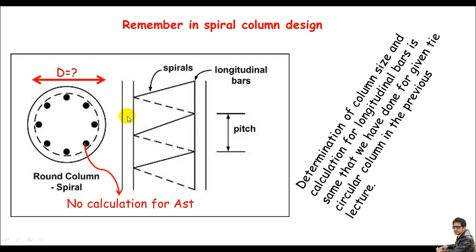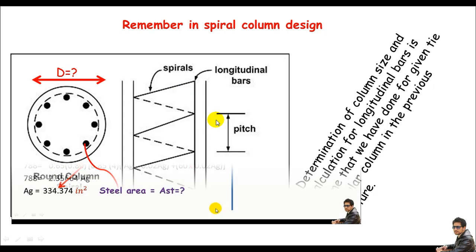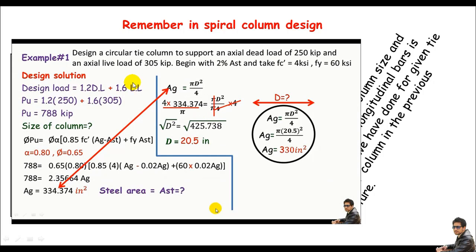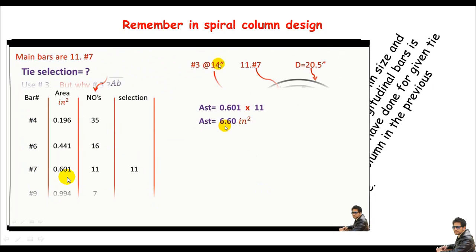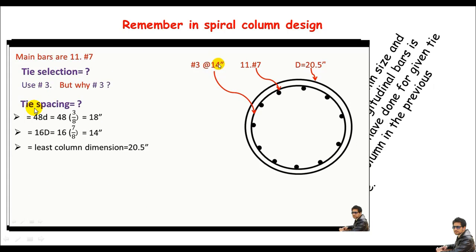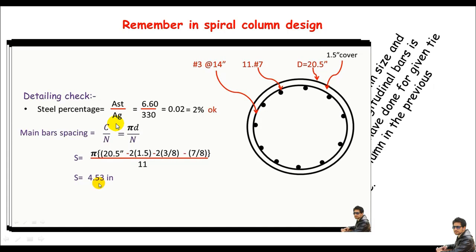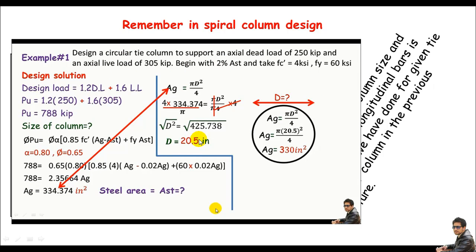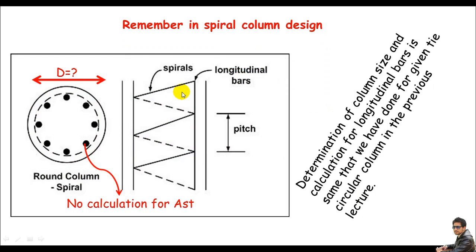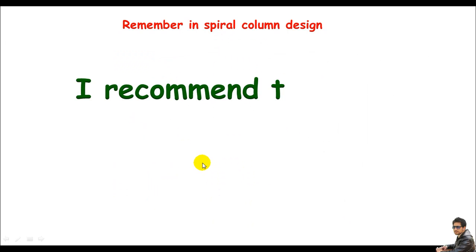Let me show you a few screenshots from the previous lecture. We were asked to calculate the circular tie column, which we have already done. Look at the column size — the diameter is just 24.5 inches. In another screenshot, we did the calculation for Ast, number of main bars, tie selection, spacing of ties, and the detailing check. So we will not waste time repeating column size or main steel area calculations.